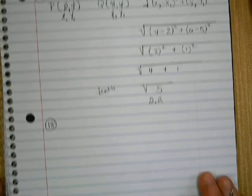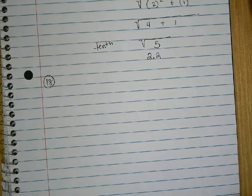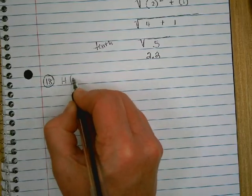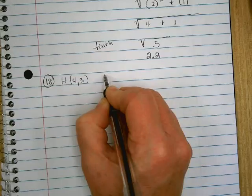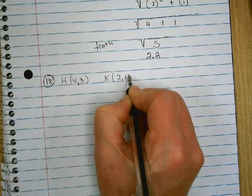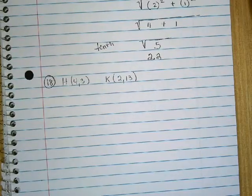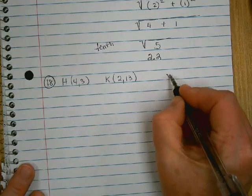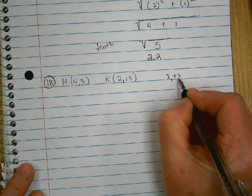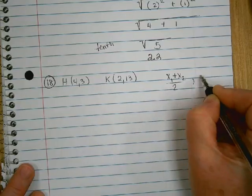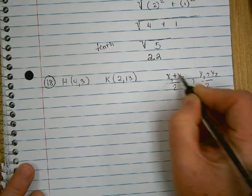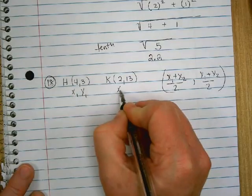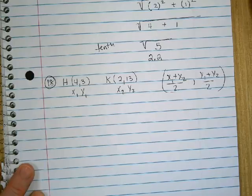Number 18, find the coordinates of the midpoint. H is at (4,3) and K is at (2,13). What's the midpoint formula say? x sub 1 plus x sub 2 over 2, y sub 1 plus y sub 2 over 2. So this is x sub 1, y sub 1, x sub 2, y sub 2, and we plug in.